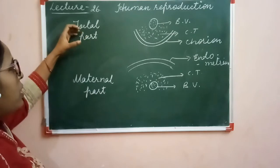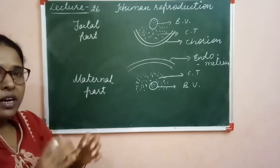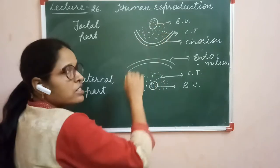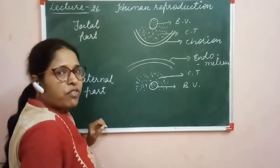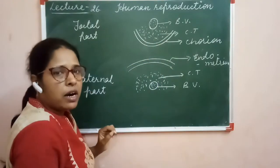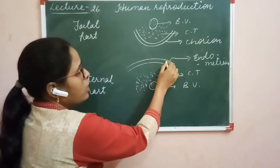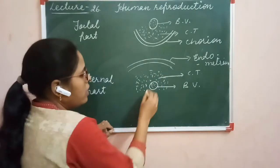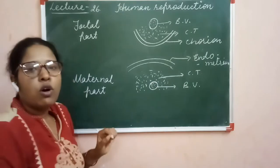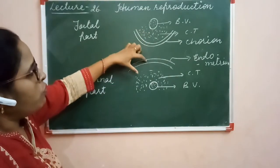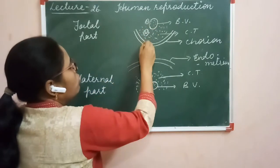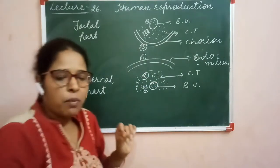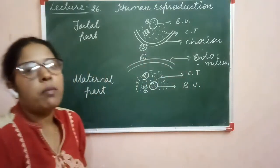Both the fetal part and the maternal part are separated with the help of six layers. The first layer is the membrane of the blood vessel of the fetal part. Second is the connective tissue of the fetal part, and third is the chorion of the fetal part. Fourth is the endometrium of the uterus or the maternal part. Fifth is the connective tissue of the maternal part, and sixth is the membrane of the blood vessel of the maternal part.